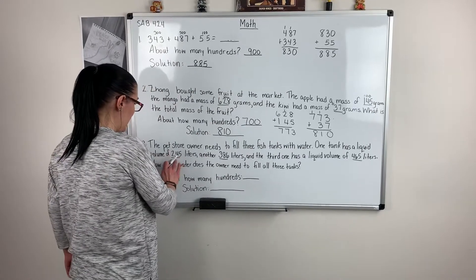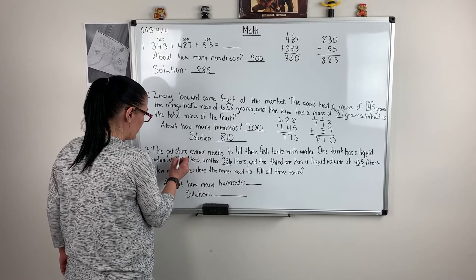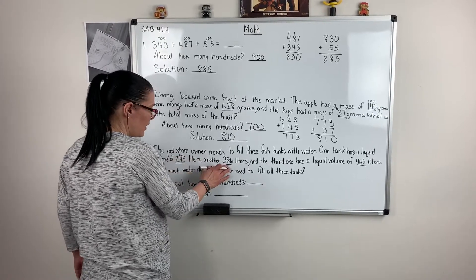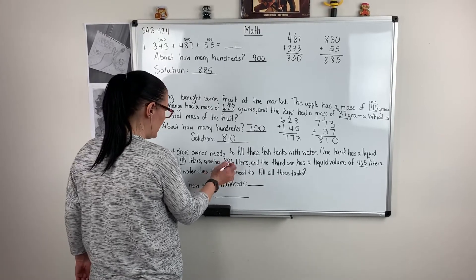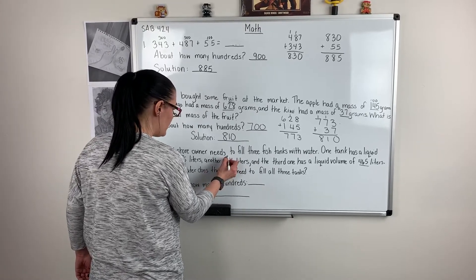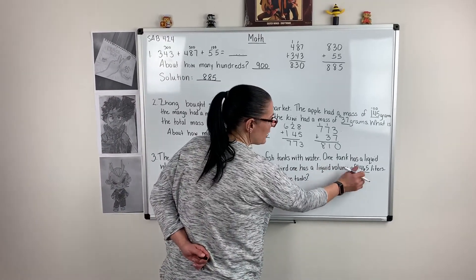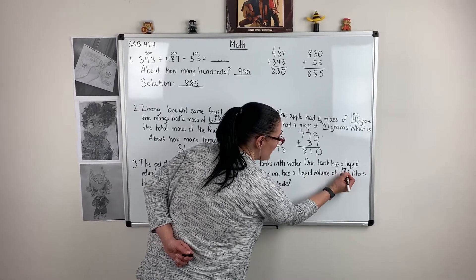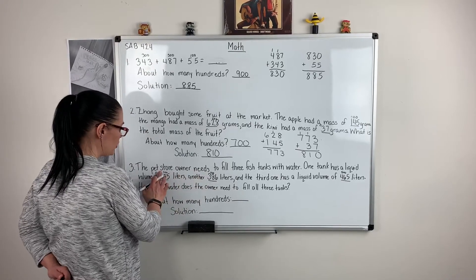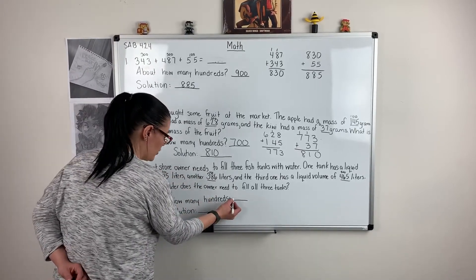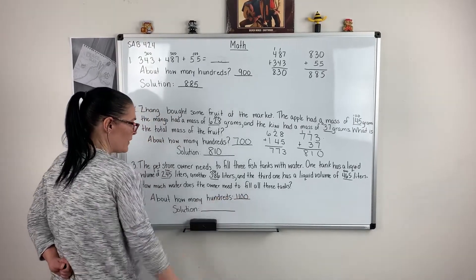I'm going to round them to the nearest hundred. I have 245 looking at my tens place, that one's going to round to 200. 386 looking at my tens place, 8 means I round up, so that's going to be 400. And looking at 465, 6 means I round up, so that's going to be close to 500. 500 plus 400 gives me 900. 900 plus 200 gives me 1,100. So my answer should be pretty close to 1,100.